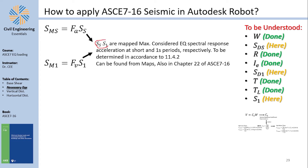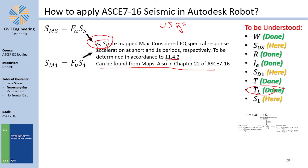SS and S1 are taken directly from seismic hazard maps or determined per section 11.4.2. For U.S. locations, the USGS website provides SS and S1 for any location. For international locations, equivalent online sources or local seismic codes should be consulted.